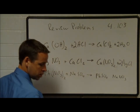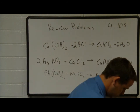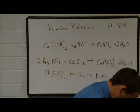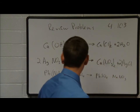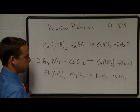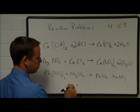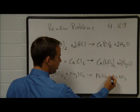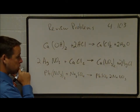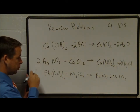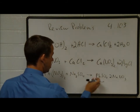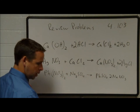Checking the back of the book confirms they use lead 2 nitrate. Sodium sulfate has 2 sodiums for every sulfate because sulfate has a minus 2 charge. Therefore we need 2 sodium nitrates. Checking: 1 lead, 1 lead, 2 nitrates, 2 nitrates, 2 sodium, 2 sodium, 1 sulfate, 1 sulfate — balanced.